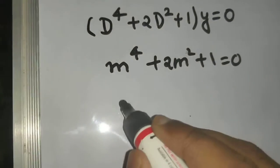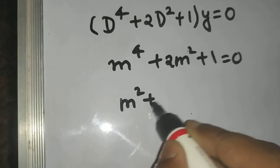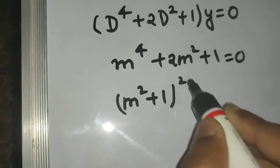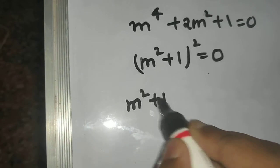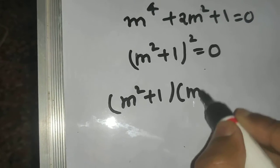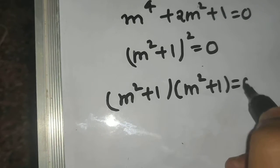Now it's easy to solve because we can write this as M square plus 1 the whole square equals to 0. You can write this as M square plus 1 times M square plus 1 equals to 0.